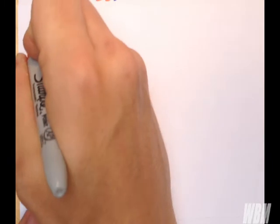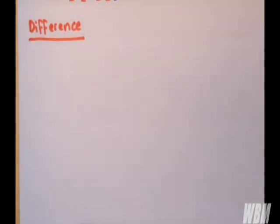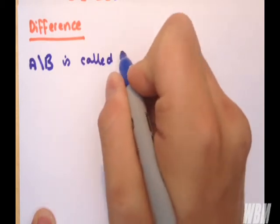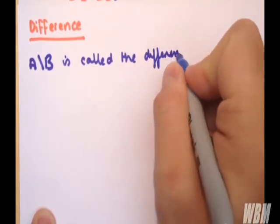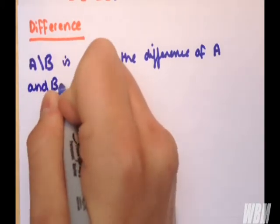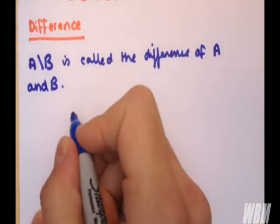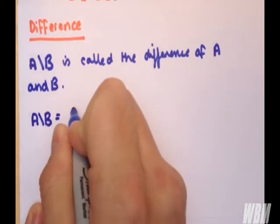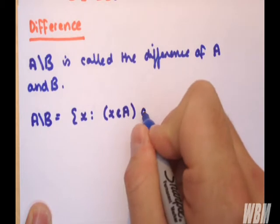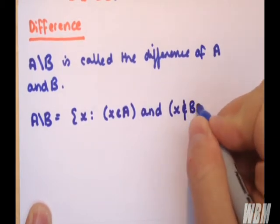Finally, we're going to finish on the difference. And we write A difference B is called the difference of A and B. Now one trick to be careful of is which order you write these two in. And that will be clear when I write the visualization process. So A difference B is equal to a set with X such that X is an element of A and X is not an element of B.